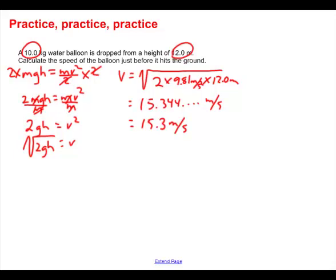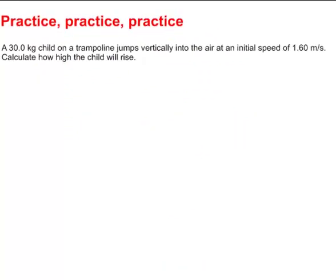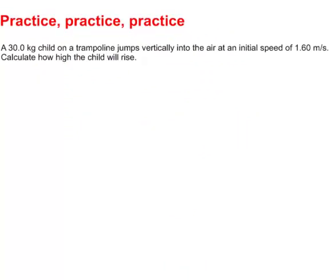That's a really good indication of why you learn algebra in previous math courses, because it sure comes in handy — I was actually able to cancel out the mass and make my work a lot easier. Next: a 30 kilogram child on a trampoline jumps vertically into the air with an initial speed of 1.60 meters per second. Calculate how high the child will rise.